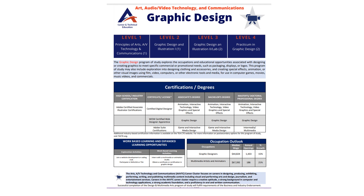For the graphic design CTE pathway, you would first take the level one Principles of Arts, Technology and Communications, then the Graphic Design and Illustration One course. After that, you advance to Graphic Design and Illustration Two, which includes the lab, and finally you would take the Practical Graphic Design course.